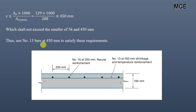The final slab sketch shows number 16 bars at 250 mm for flexural reinforcement and number 13 bars at 450 mm for temperature and shrinkage reinforcement. This video showed how to design a one-way slab for flexural, shrinkage, and temperature reinforcement. If you found this helpful, please subscribe to the channel and share the video. Thanks for watching and stay tuned.